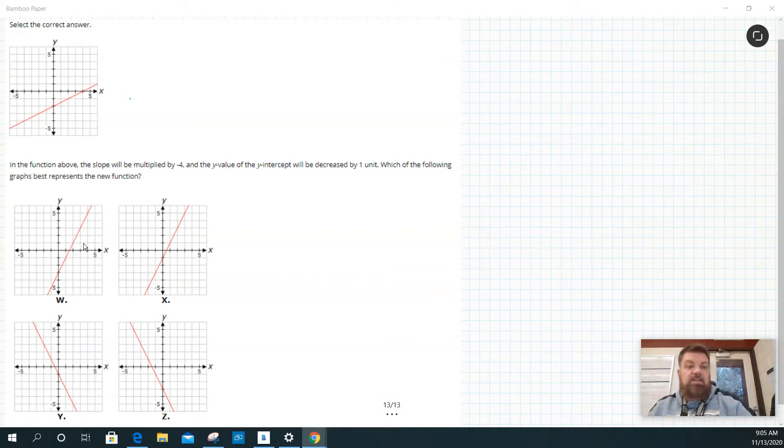It's a select correct answer. In the function above, the slope is multiplied by negative four and the y-intercept will be decreased by a unit of one.